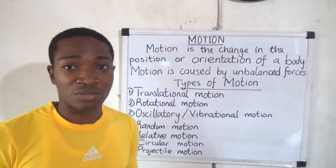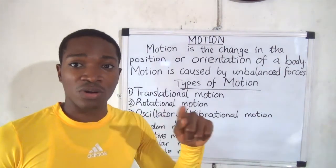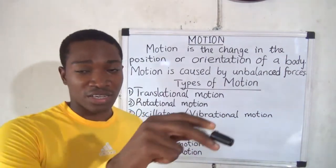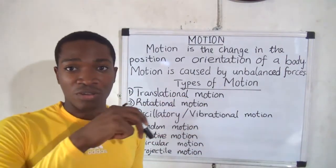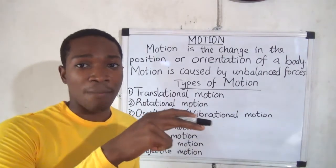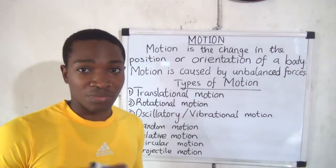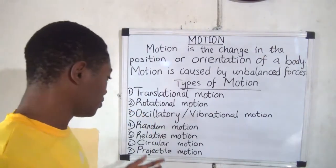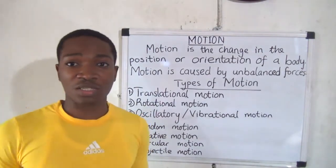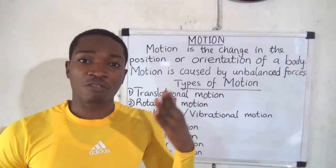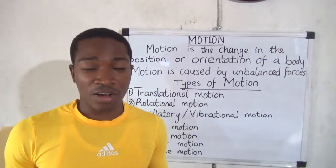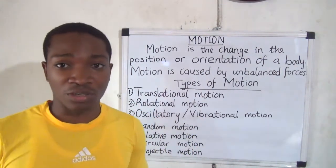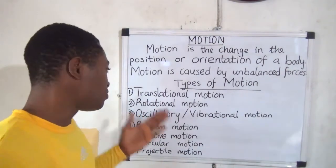Circular motion is the movement of an object along a circular path. An example is the movement of the earth around the sun. The earth moves in a circular path, and in that case you'll be talking about centripetal force and centrifugal force. Projectile motion is the movement of an object along a curved path under the influence of gravity. All of these will be explained in detail, but for this lesson we focus on just the first four.